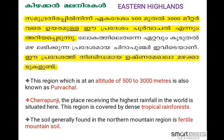This region, which is at an altitude of 500 to 3,000 meters, also known as Purvanchal, receives the highest rainfall in the world. This region is covered by dense tropical forest. The soil generally found in the northern mountain region is fertile mountain soil.